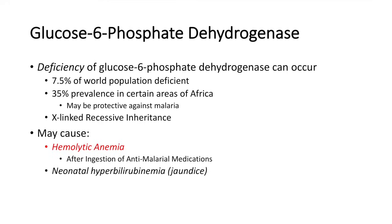G6PD deficiency may also cause neonatal hyperbilirubinemia, or neonatal jaundice. Note that there is a normal physiological jaundice in the neonatal period — called physiologic jaundice — which occurs between two to three days of age. However, if a baby becomes jaundiced within the first 24 hours of birth, you may want to check for G6PD deficiency. That was a quick overview of the pentose phosphate pathway — I hope you found it helpful. Please like and subscribe for more videos like this one. Thank you for watching and have a great day.